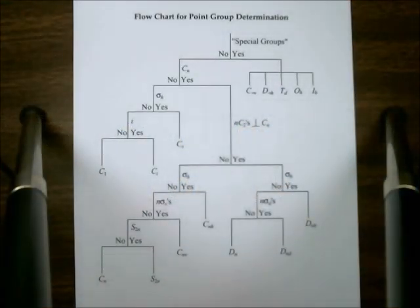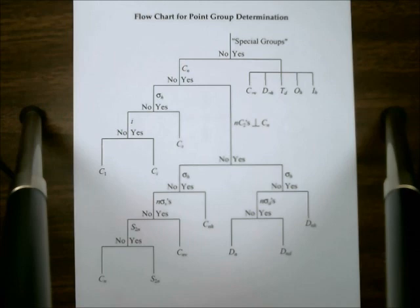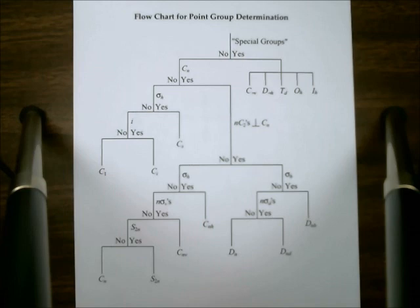This is a continuation of the lecture from Friday last week, and we're in the set of slides labeled CH04-5 symmetry. Remember that when we broke off, we were looking at how to determine the point group of molecules, using this flowchart as the approach. You'll want to print out the slides or have them on a separate electronic device to follow along.